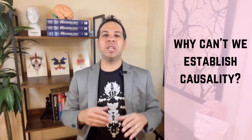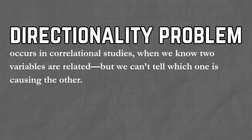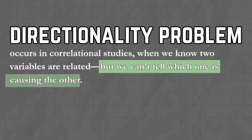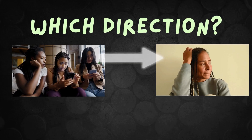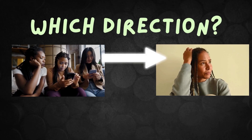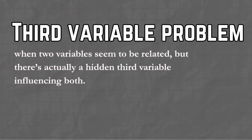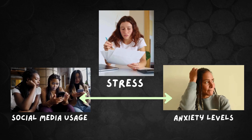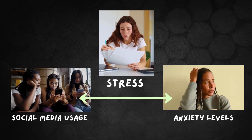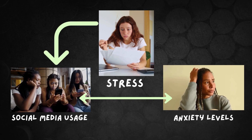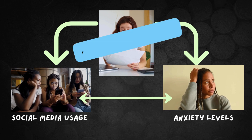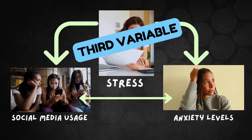And there are two big reasons why we cannot establish causality. First, the directionality problem: we don't know which variable is influencing the other. Are teens anxious because they spend hours on social media? Or do anxious teens turn to social media to cope? A correlational study can't tell us — it's a total chicken or the egg situation. Second, the third variable problem: maybe something else entirely is causing both variables. Let's say students who are stressed are more likely to scroll through TikTok and report higher anxiety levels. In that case, stress is the sneaky third variable pulling the strings behind the scenes.